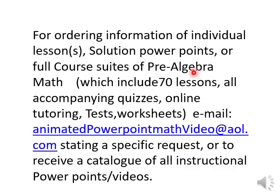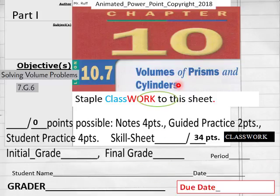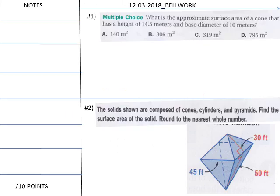Hello everybody, getting ready to do Lesson 10.7 of Pre-Algebra Math Today, Part 1. Part 2 is available here. 10.7, Volumes of Prisms and Cylinders. You have a 34-point skill sheet today. You have no note-taking today. So let's get into it.